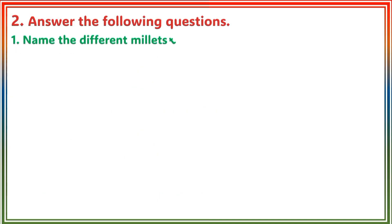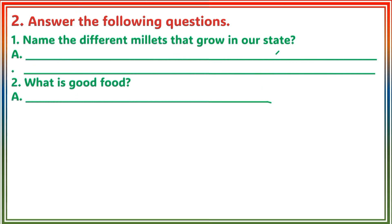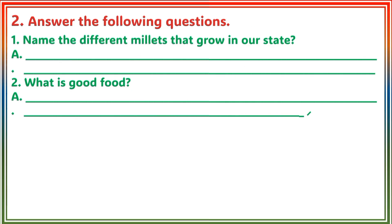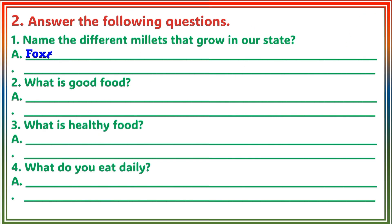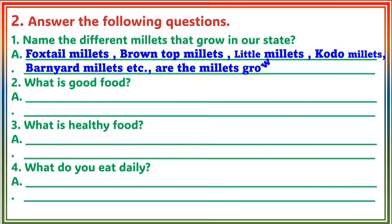Section 2: Answer the following questions. Question 1: Name the different millets that grow in our state. Answer: Foxtail Millets, Brown Top Millets, Little Millets, Kodo Millets, and Barnyard Millets are the millets grown in our state.